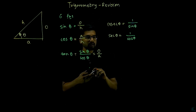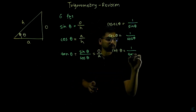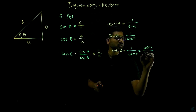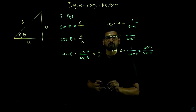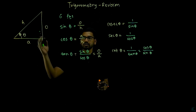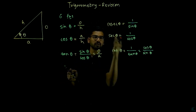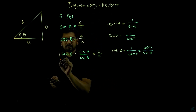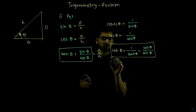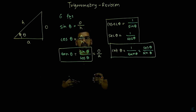The sixth function is cot theta. Cot theta is the inverse of tan theta, which makes it cos theta over sine theta. So these are the six fundamental trigonometric functions. From an engineer's perspective, the key relations are: tan theta equals sine theta over cos theta, and cot theta equals cos theta over sine theta. You will rarely need to use opposite over hypotenuse or adjacent over hypotenuse directly.